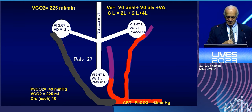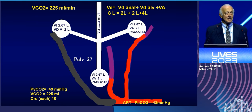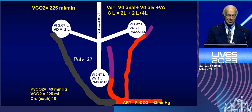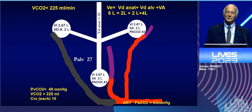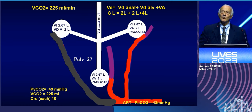The other two regions work perfectly, and the pCO2 is again 43 inside the alveoli that work, and 43 in the artery. If we go and measure the expired CO2, the expired CO2 will be a mixture between the alveolar dead space, the anatomical dead space, and the gas coming from the normally perfused alveoli. The expired CO2 will be lower than 43.